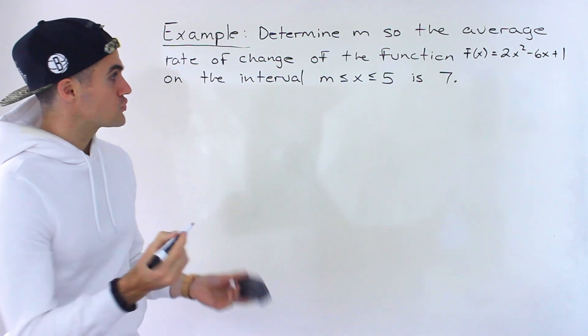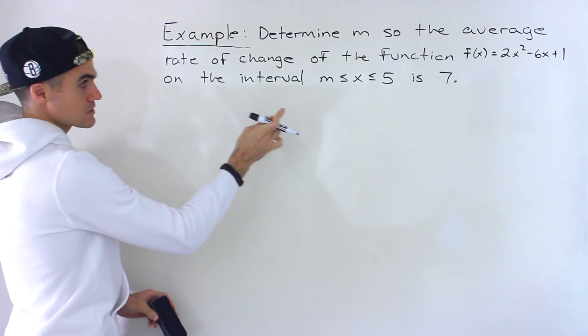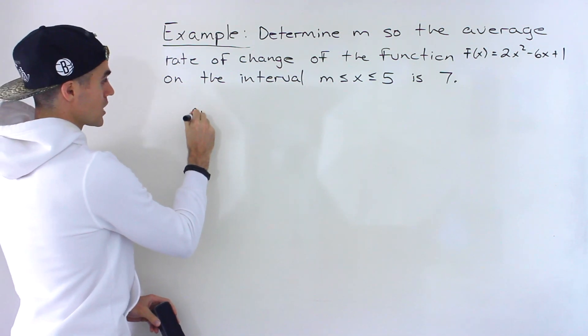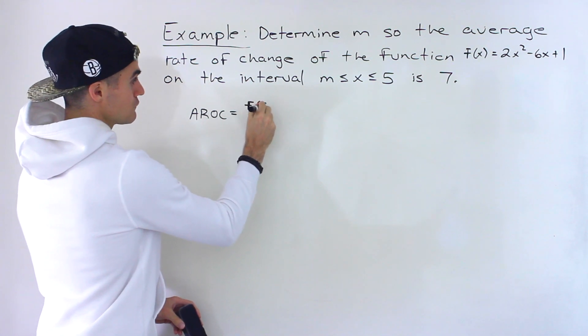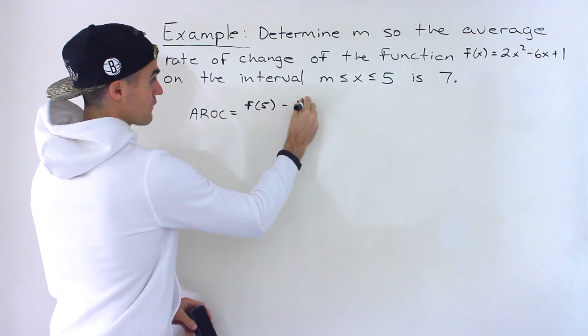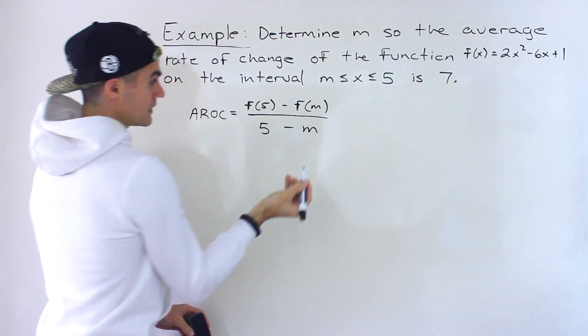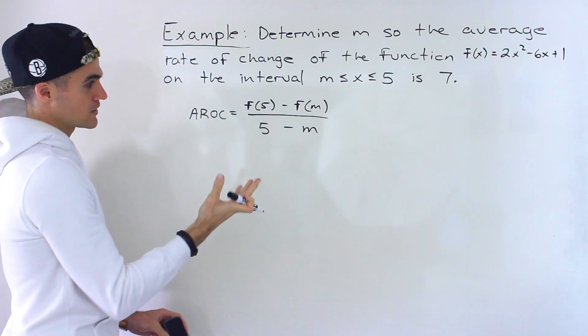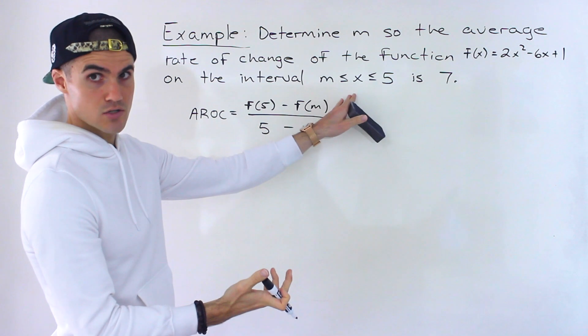Now average rate of change between two values is always what? Between these two values in particular, the average rate of change is going to be f(5) - f(m) all over 5 - m, right? That's how you set up the average rate of change. This is the slope of the secant between these two points.